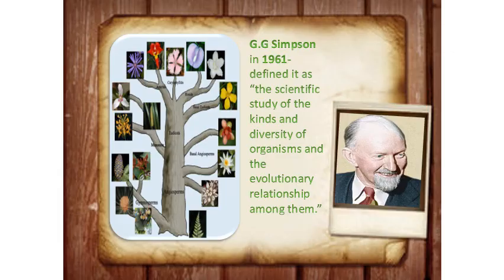We have a rational definition of plant systematic given by G.G. Simpson in 1961. He defined it as the scientific study of the kinds and diversity of organisms and the evolutionary relationship among them. This means that plant systematic is a science that includes and encompasses traditional taxonomy, in which the primary goal is to reconstruct the evolutionary history of plant life, dividing plants into taxonomic groups using different characteristics.